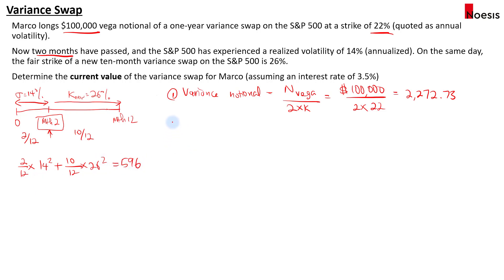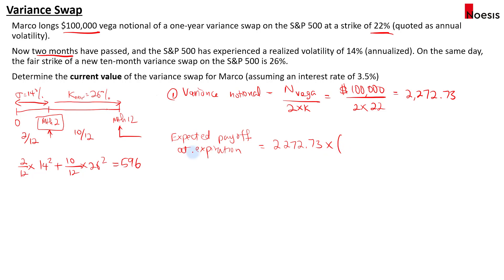We can now calculate the value of the variance swap — we need to calculate the expected payoff at expiration. The expected payoff at expiration equals the variance notional, which is 2,272.73, multiplied by the weighted average variance of 596 minus the strike squared, which is 22². This equals 254,545.76, which is what we expect at expiration at month 12.